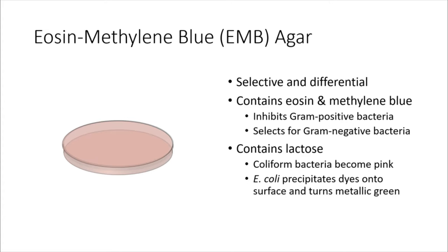Then we have the eosin methylene blue agar, or EMB agar plate. This media is again both selective and differential. It contains the dyes eosin and methylene blue, which have the role of inhibiting gram-positive bacteria and allowing gram-negative bacteria to selectively grow. The plate also contains lactose, which causes coliform bacteria to become pink. In particular, one species can be especially differentiated on this plate — E. coli — because E. coli will precipitate these dyes onto the surface and cause the growth to turn a really vibrant metallic green color. You can see an example of this in the photo of a plate shown in your lab activity. On this plate we'll be growing E. aerogenes, E. coli, S. typhimurium, and S. aureus.